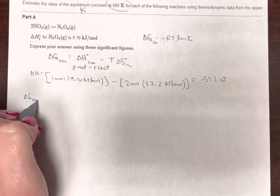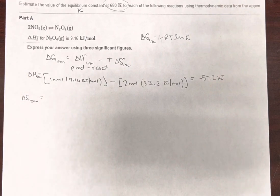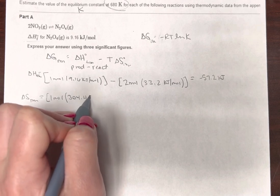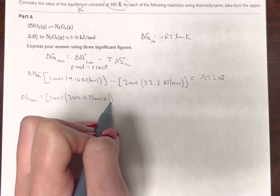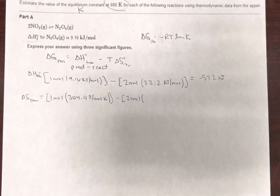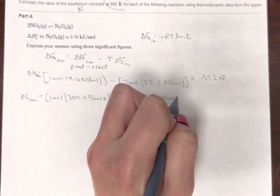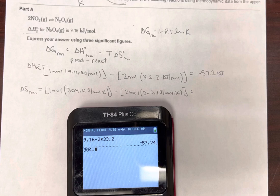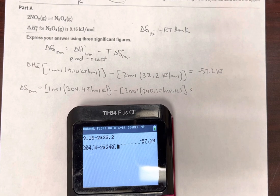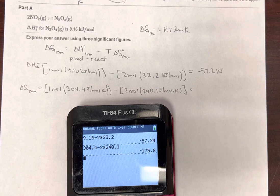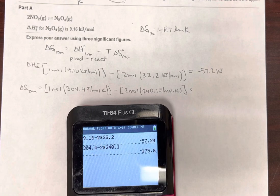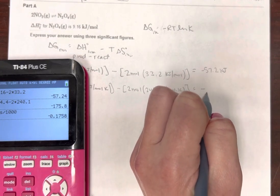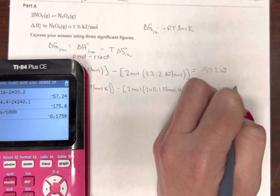And now delta S. Alright, here, once again, we have one mole, and this is 304.4, this is joules per mole Kelvin. Minus 2 moles, and this one is 240.1 joules per mole Kelvin. Make sure you're using the correct units here. So we have 304.4 minus 2 times 240.1. So I get negative 175.8, and that's going to be in joules per Kelvin. It's most convenient here to go ahead and make this kilojoules. So that's negative 0.176 kilojoules per Kelvin.